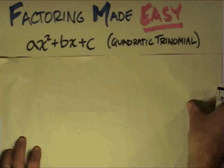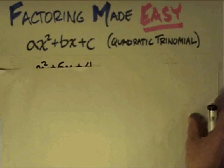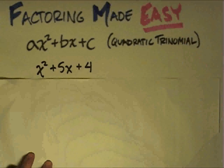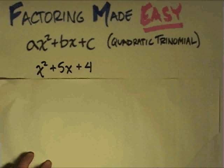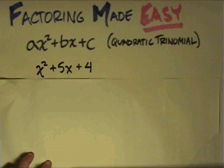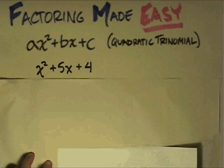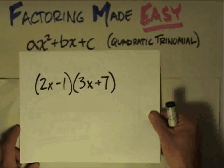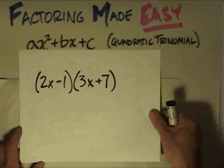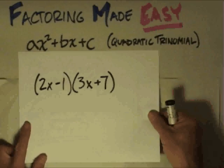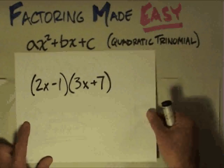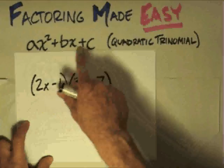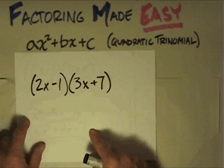In the simplest form we have something like x squared plus 5x plus 4. But before we take that on, I want to do a little review about what it means to FOIL out or multiply two binomials. Because when we factor, we're trying to break it down into two binomials that multiply to make our quadratic trinomial.